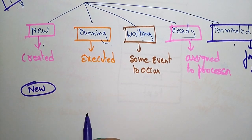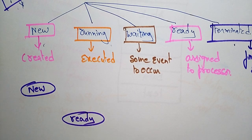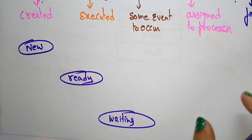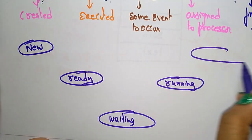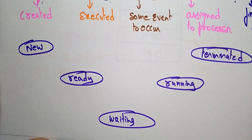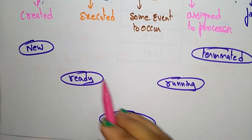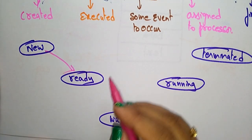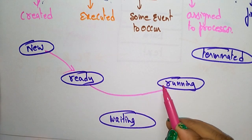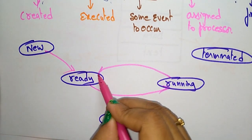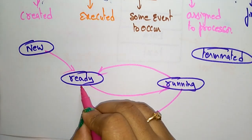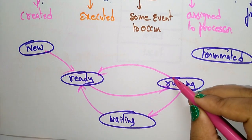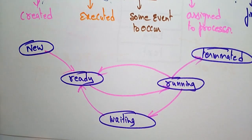Let me draw the state diagram. The five states are: new, ready, running, waiting, and terminated. From new the process goes to ready. From ready it may go to running. When interrupted, the running process may re-enter ready. From running it may enter waiting, and after waiting it may become ready again. The running program may also be terminated after execution.